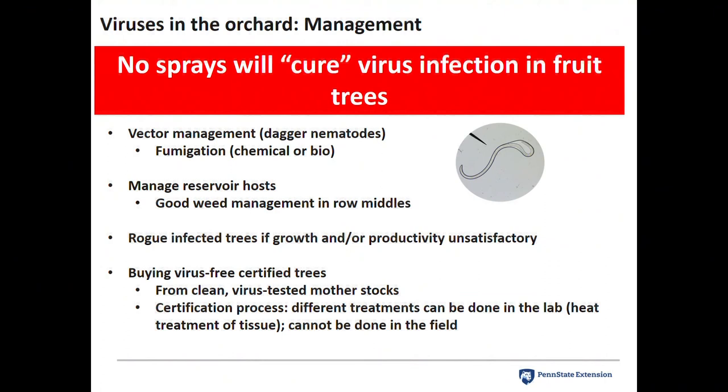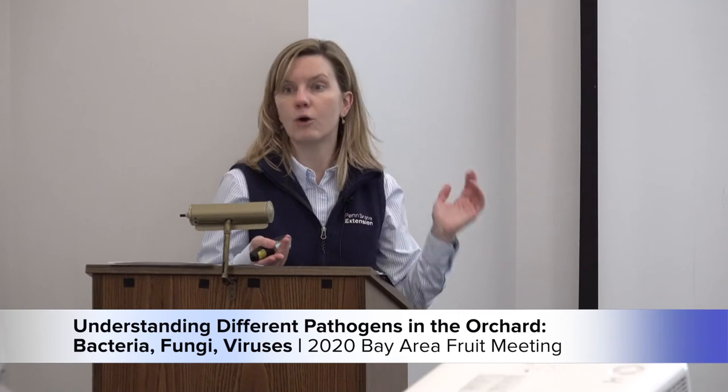It's becoming harder to achieve virus-certified trees because of deep sequencing or high-throughput sequencing technology — we can find a needle in a haystack. We're finding many previously undescribed viruses in tree fruit that we didn't know were there. We don't yet know what role, if any, they play in disease. The question becomes how do we regulate all these organisms. It may reach a point where we can never truly have virus-free trees — our goal might be to ensure trees are devoid of the most problematic ones. This is a hot topic among nurseries and regulatory folks.